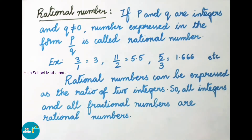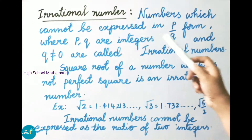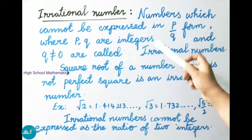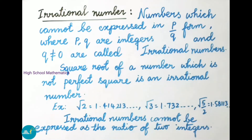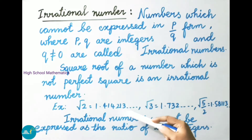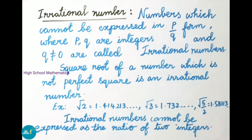Next, we shall see the irrational number definition. Numbers which cannot be expressed in P by Q form, where P and Q are integers and Q is not equal to 0, are called as irrational numbers. The square root of a number which is not a perfect square is an irrational number. Examples: √2 = 1.414213..., √3 = 1.732..., √(5/2) = 1.58113.... Irrational numbers cannot be expressed as the ratio of two integers.